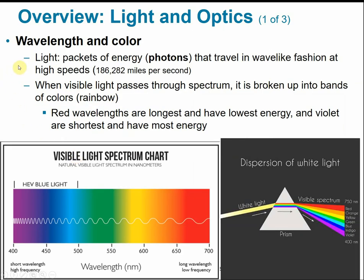Light is basically energy that's traveling in a wave-like fashion. These packets of light energy are referred to as photons, and they're traveling at extremely high speed — the speed of light is roughly 186,000 miles per second. When visible light travels through a prism, it can be broken up into its different bands or colors, giving us a rainbow.